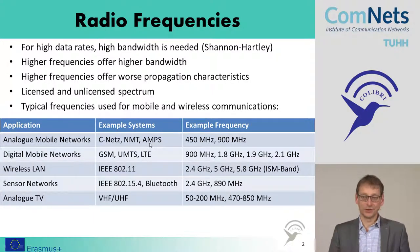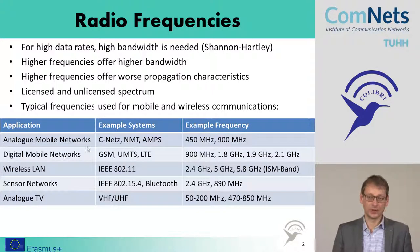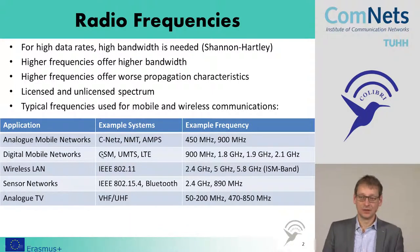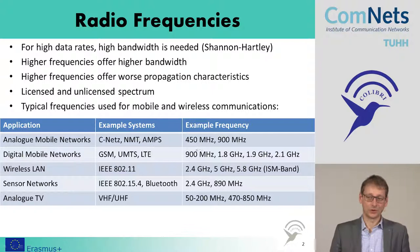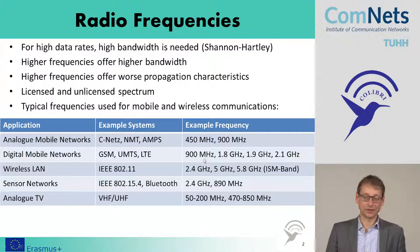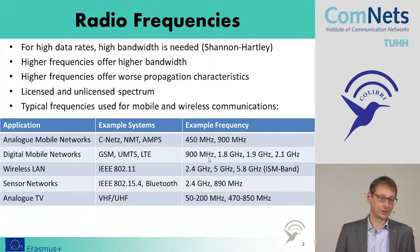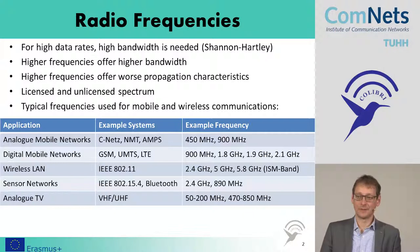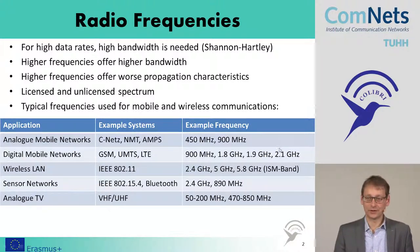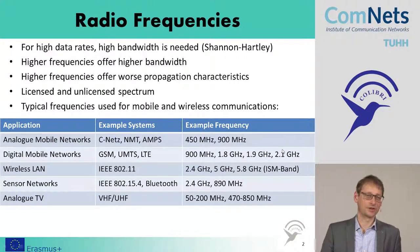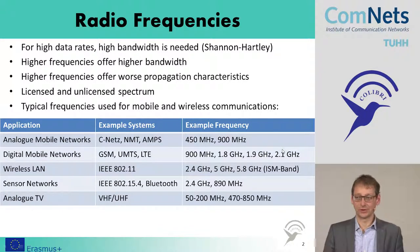For digital communication networks — GSM, UMTS, LTE — GSM was at 900 MHz and also 1.8 GHz, with rather low data rates. For UMTS and LTE, we are at around 2 GHz, with more spectrum requirements and also higher frequencies.